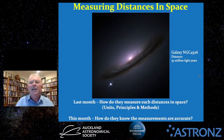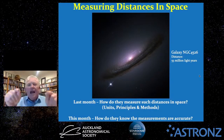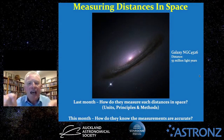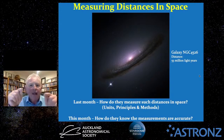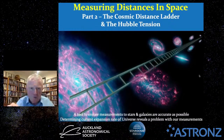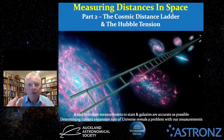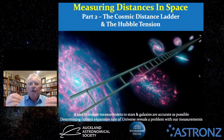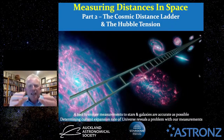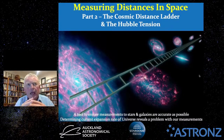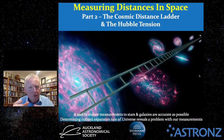We discussed various principles and methods that astronomers use to measure these distances. This month we ask another question: how do they know their measurements are accurate? How do they know they are precise enough? That's why tonight's talk is titled 'Measuring Distances in Space, Part Two: the Cosmic Distance Ladder and the Hubble Tension.'